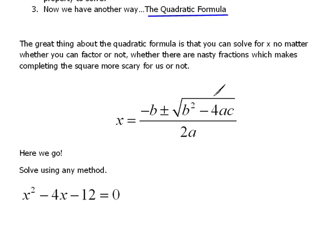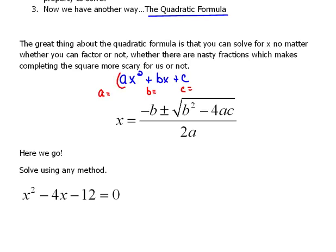The quadratic formula says x equals negative b, plus or minus the square root of b squared minus 4 times a times c, all divided by 2 times a. Where we get these numbers — don't forget our quadratic is in the form ax squared plus bx plus c. I think the best thing to do is list out a equals, b equals, and c equals, meaning the numbers in front of your variables and your constant term. If you can identify your a, b, and c, then it's just a matter of plugging the numbers in where they go and simplifying.